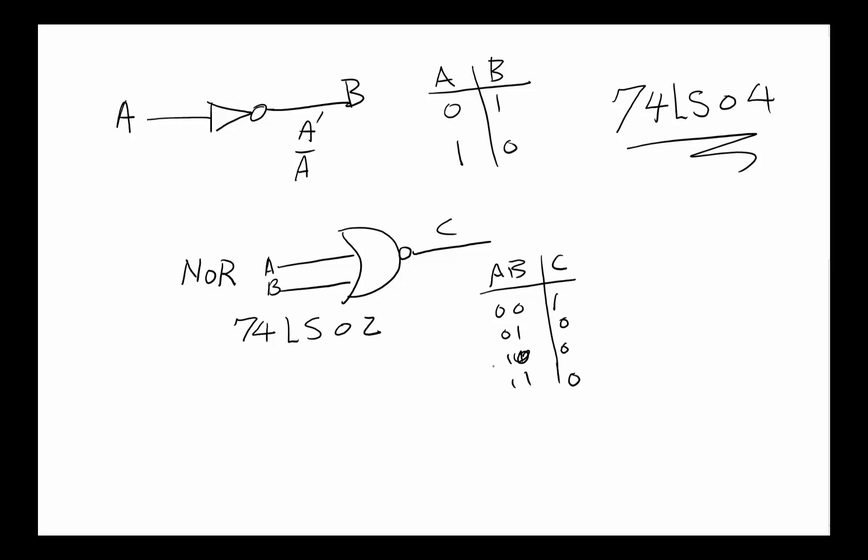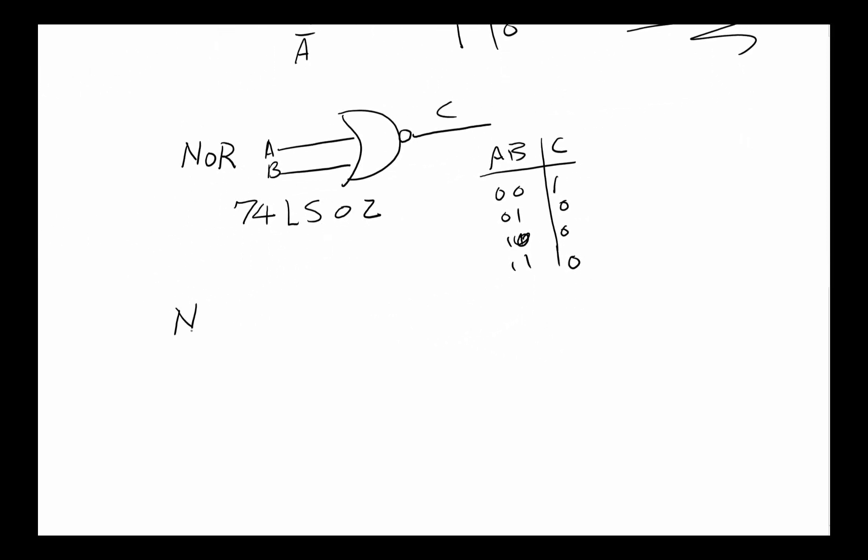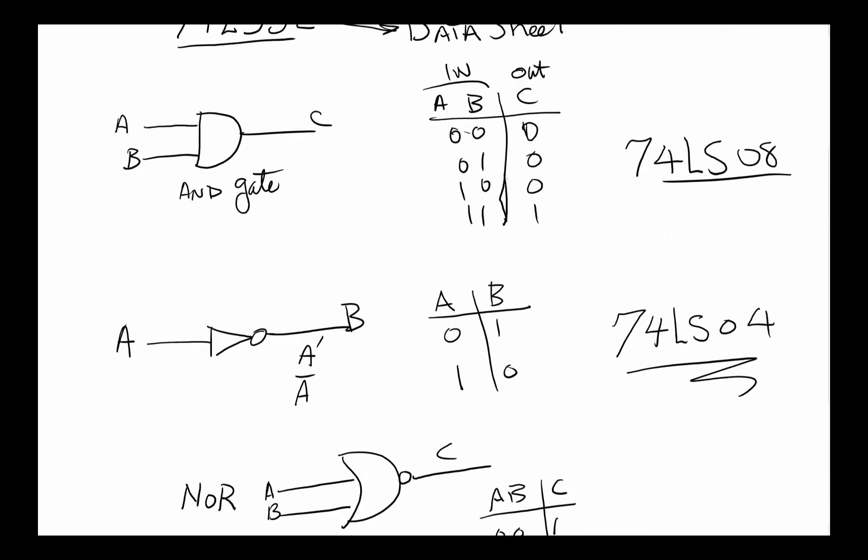One other one along the NOR is a NAND gate, which is basically an AND with a NOT attached to it. A NAND gate is usually drawn this way. That one basically is AND with a NOT attached to it. So 0-0 gives 1, 0-1 gives 1, 1-0 gives 1, 1-1 gives 0. It's the opposite of what an AND is.